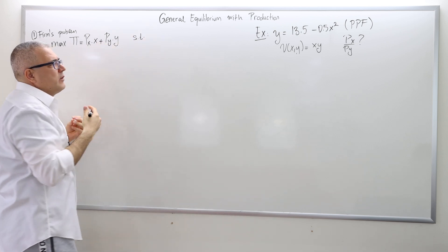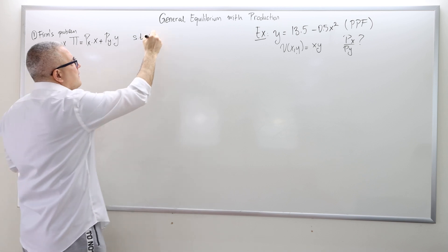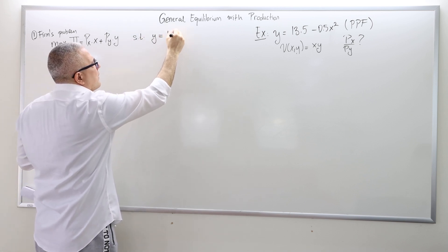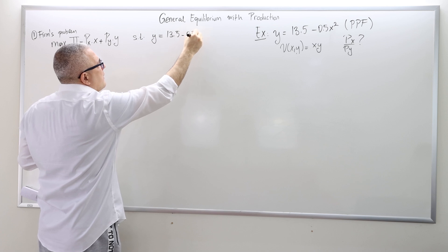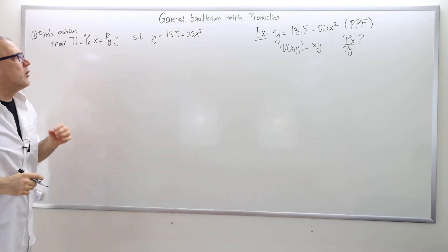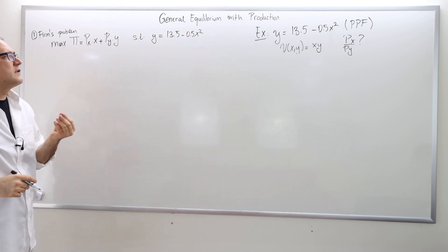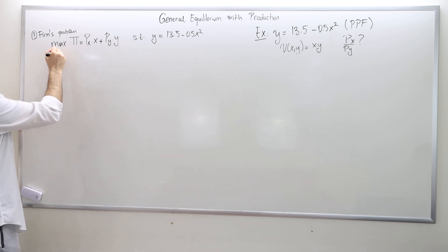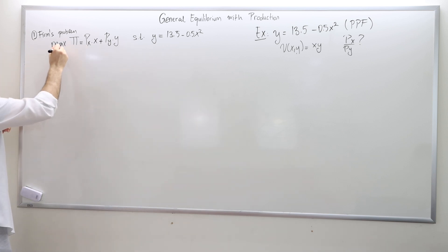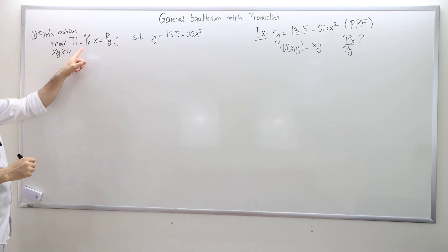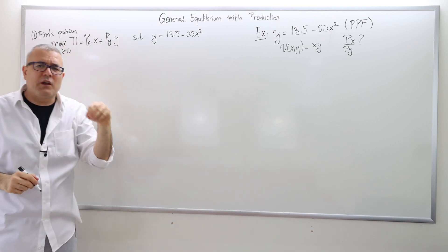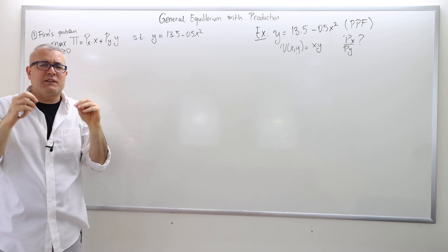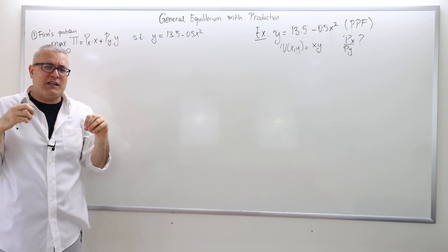Subject to the constraint: you cannot produce Y more than 13.5 minus 0.5 X squared. You choose both X and Y non-negative. PX and PY are the prices — these prices in the market are fixed. The seller takes the prices as given.